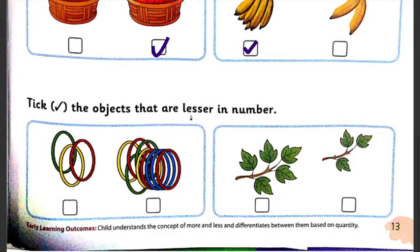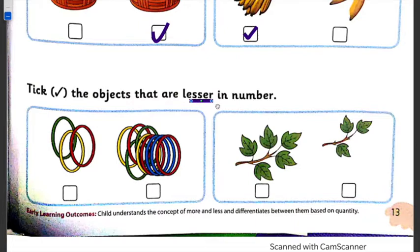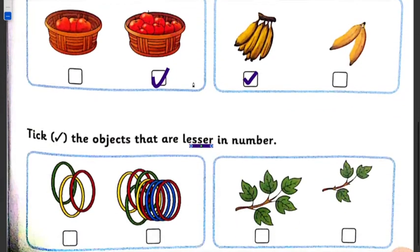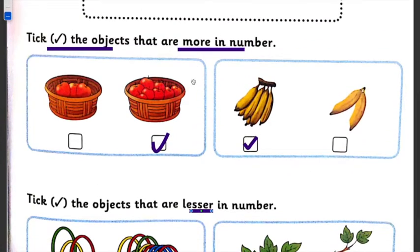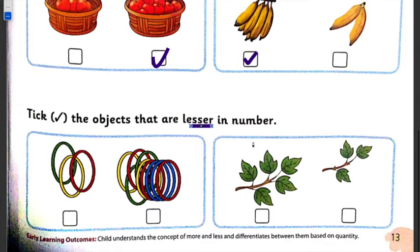Next: tick the objects that are lesser in number. Which is less? We have to learn less comparatively. Now look at what is more and which is more in quantity, but here we need to find which is less. The statement says: tick the objects that are lesser in number. You have to tick the objects that are lesser in number.